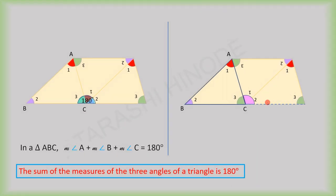If we take a closer look at this, here we can see this is an exterior angle for this triangle. What about the angle measure of this exterior angle? It is nothing but the sum of the measures of angle one and angle two. And what about angles one and two? They are the interior opposite angles. So, here we get: measure of the exterior angle is equal to the sum of the measures of the interior opposite angles.